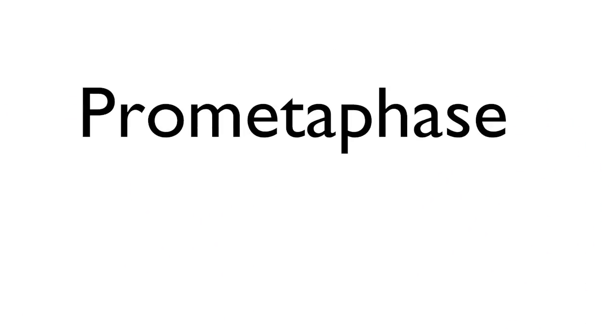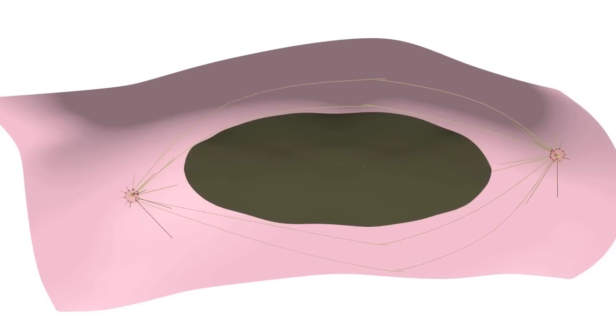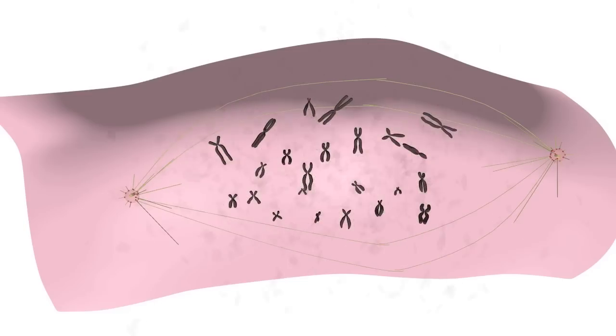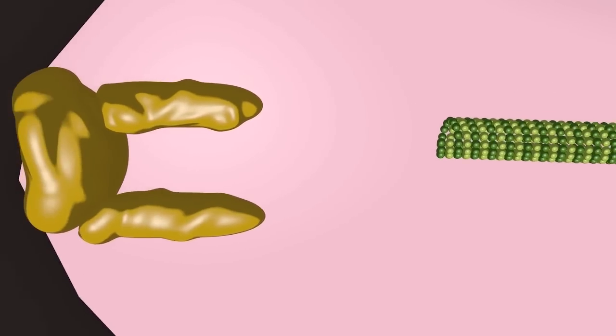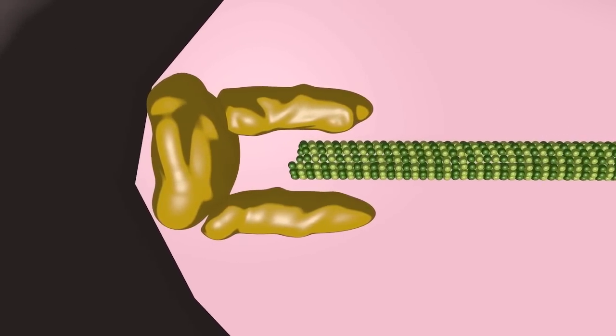Contact between the microtubules and the chromosomes happens in prometaphase, when the nuclear envelope breaks down. The disassembly of the nuclear envelope allows the microtubules to attach to chromosomes at specialized structures called kinetochores.